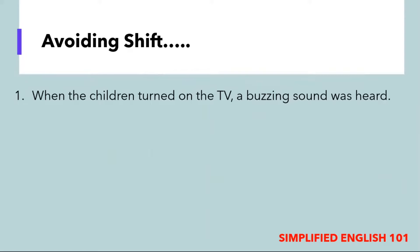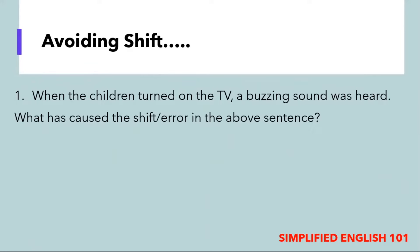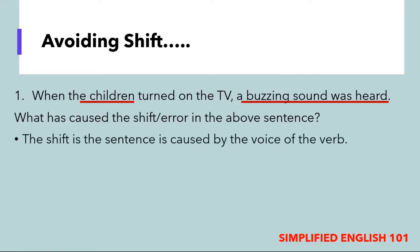The second example reads: when the children turned on the TV, a buzzing sound was heard. What has caused the shift or error in this sentence? In the first part of the sentence, it is the children — the doer of the action — who turned on the TV. However, in the second part of the sentence, we are left wondering who or what heard this buzzing sound. It is clear that the shift is caused by a change in the voice of the verb. When writing a sentence, there should be no vagueness about the action being done or the doer of it. If this is not done, we will create a dangling or misplaced modifier.